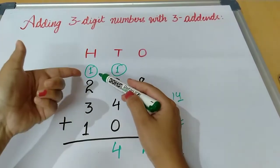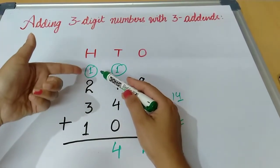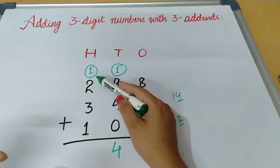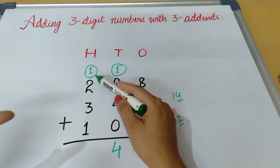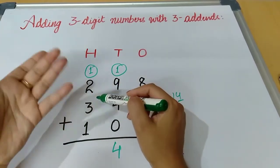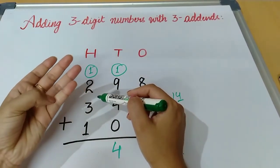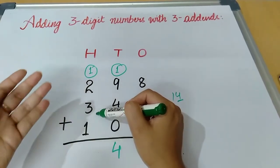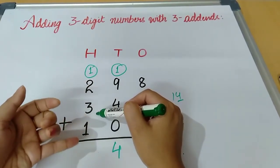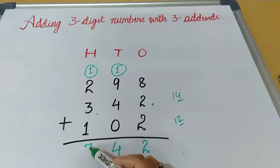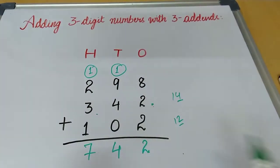Two plus one is three. Three plus three: four, five, six — six. Then six plus one, the next number, gives seven. So the answer will be seven hundred forty-two. In this way you can add three-digit numbers with three addends.